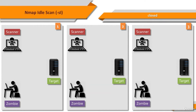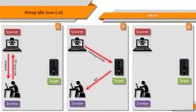Now let's see what happens in an IdleScan if the target port is closed. The first step is to probe the IPID of the zombie's system. The attacker sends a SYN/ACK to the zombie. Since the zombie does not expect the packet, it sends back a RST with an IPID. The second step is to forge a SYN packet from the zombie to the target system. The target sends a RST because the port is closed. The zombie ignores the unexpected RST, so its IPID does not change.